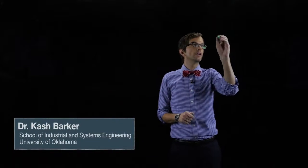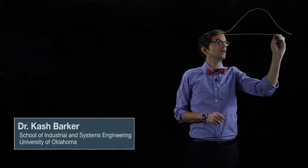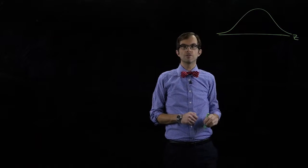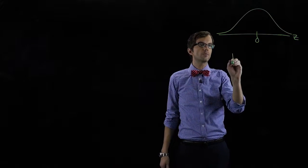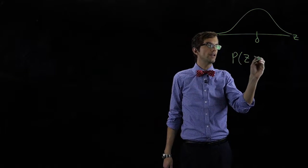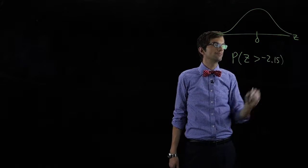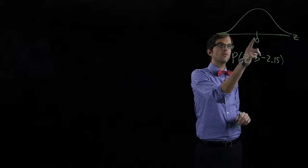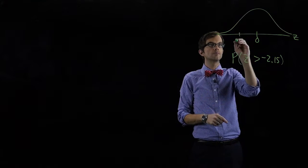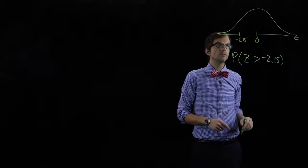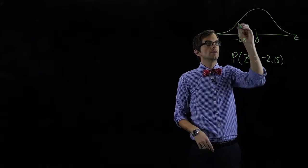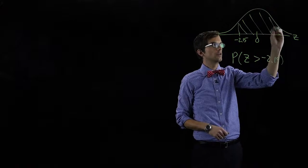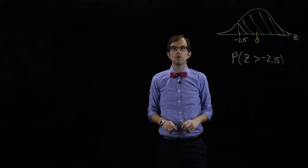Let's take a look at another example from a standard normal distribution. Here's the distribution for z — it's got a mean value of zero. Let's say we want to know what's the probability that z is greater than negative two point one five. Negative two point one five would be over here to the left of zero, and we want the probability that z is greater than negative two point one five.